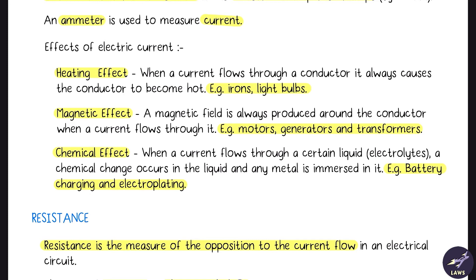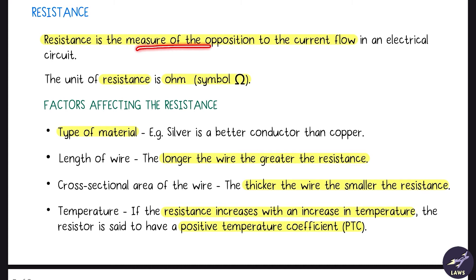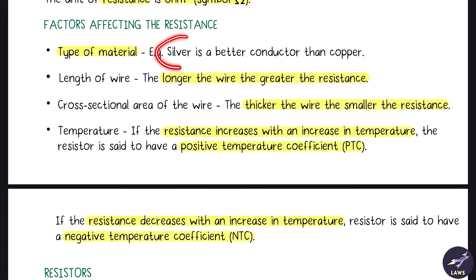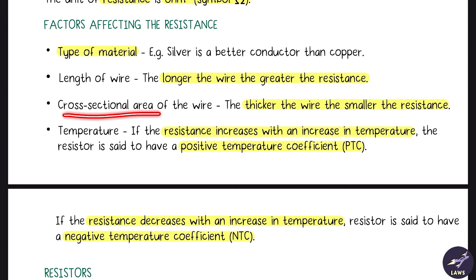Resistance is the measure of opposition to the current flow in an electrical circuit. The unit of resistance is the ohm. Various factors affect resistance: the type of material (silver is more conductive than copper but more expensive), the length of the wire (longer wire means greater resistance), and the cross-sectional area of the wire (thicker wire means smaller resistance).